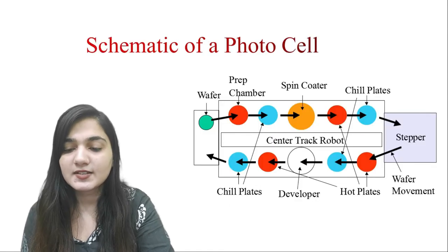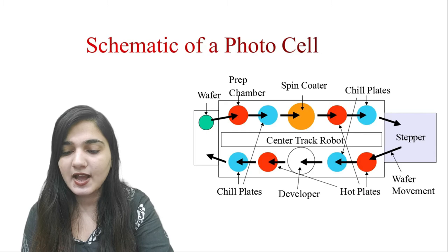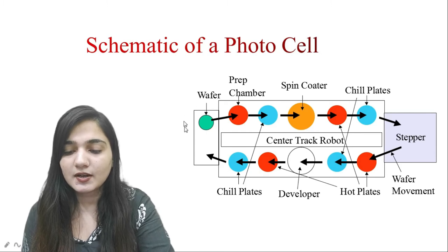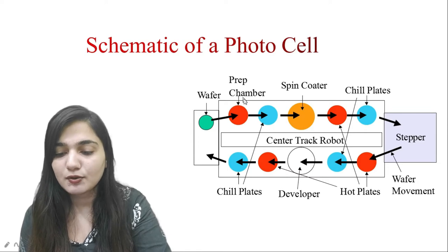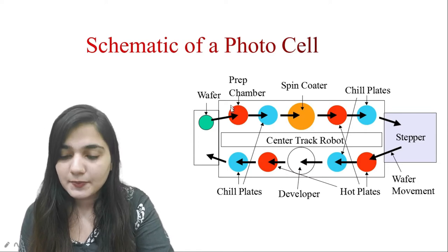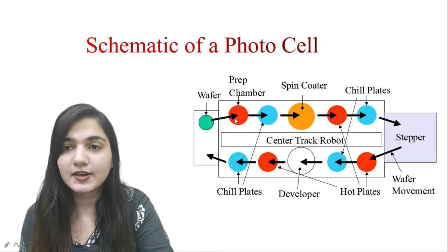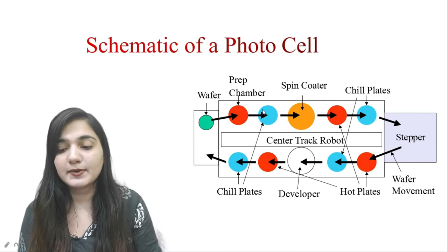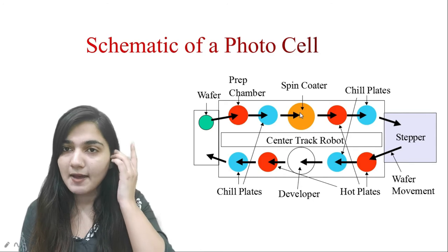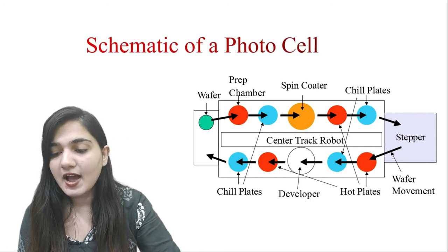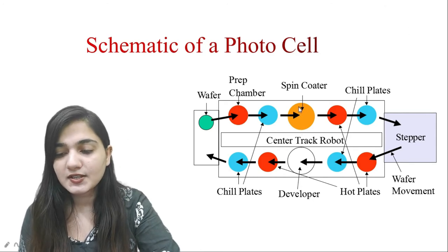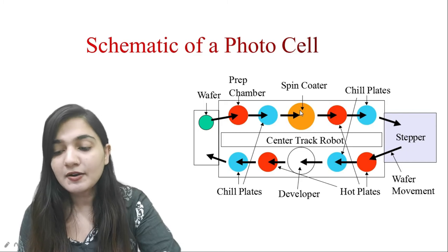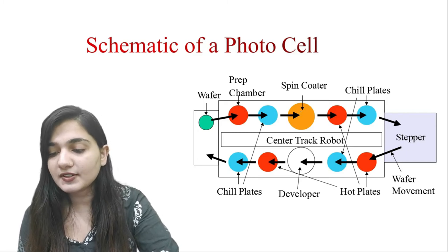Now this is the schematic of the photocell. Here we have the wafer — the sky blue color represents the ambient temperature. Here we have the preparation chamber where we have the pre-bake, and after that we have the chill plate so that the wafer will be going to the spin coater at ambient temperature. Here we have the layer of photoresist on the wafer applied with the spin coater. After that we give it to the soft bake process.